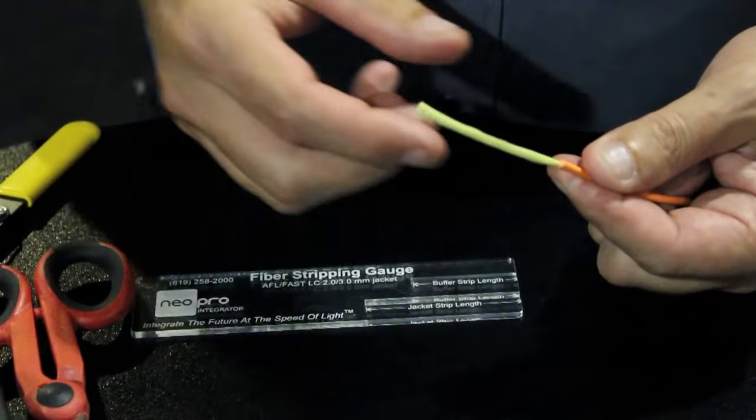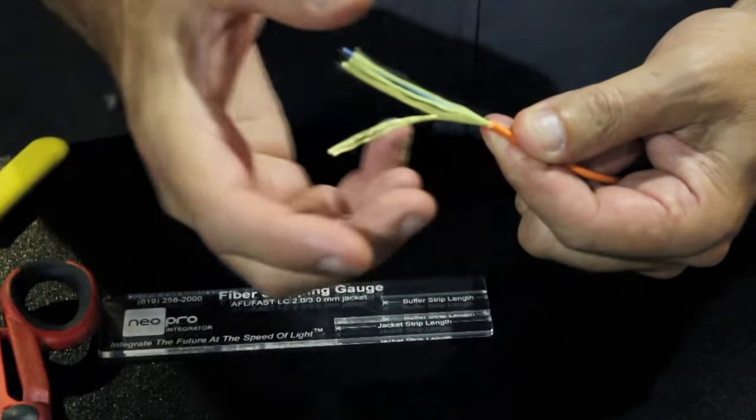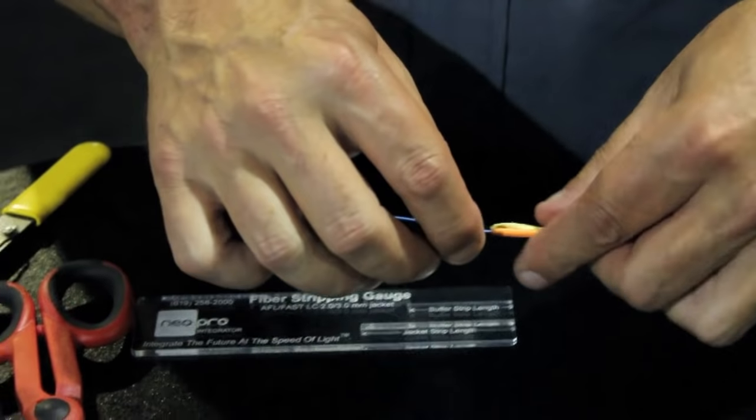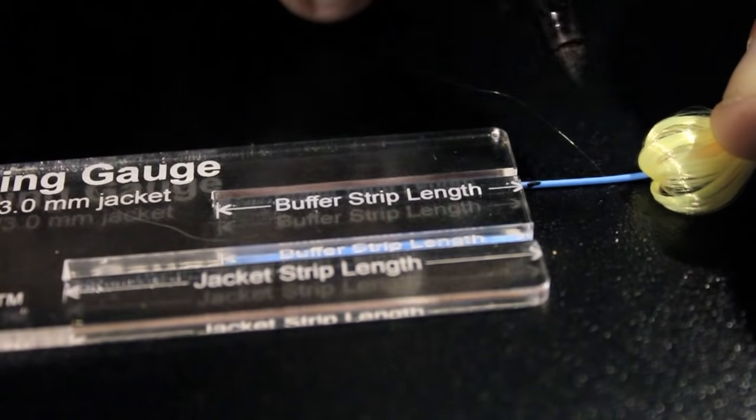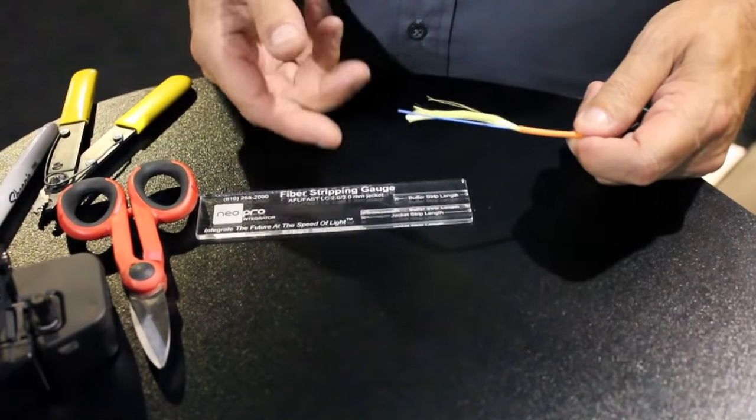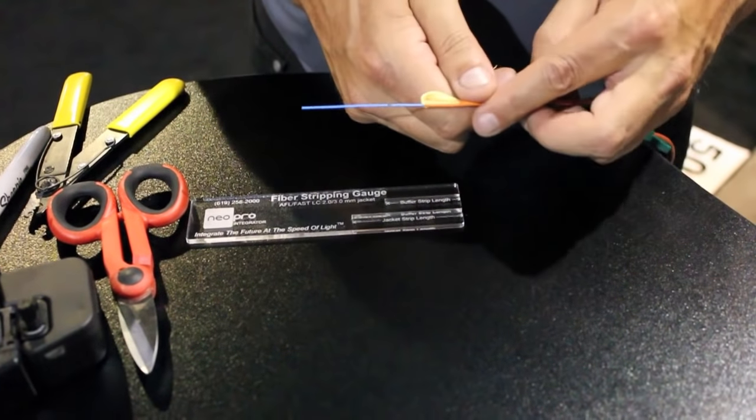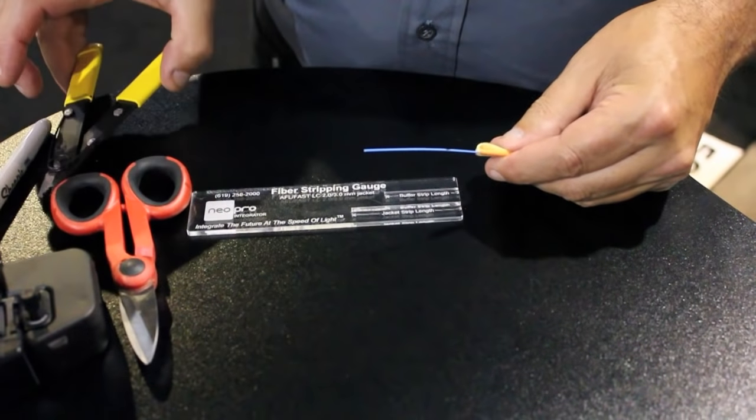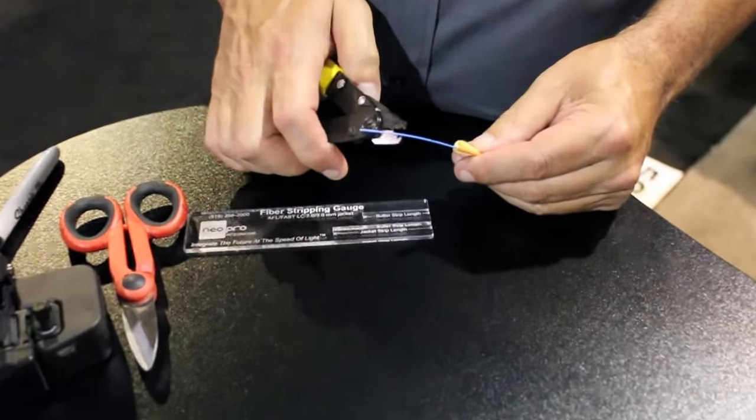Inside there's the Aramid fiber, also known as Kevlar fiber. And you just want to pull those out of your way to expose the buffer. The buffer is 900 microns, small. So you want to mark that for the next step of stripping. And you can't strip the buffer off all at once. You need to strip it off in about 1cm segments.